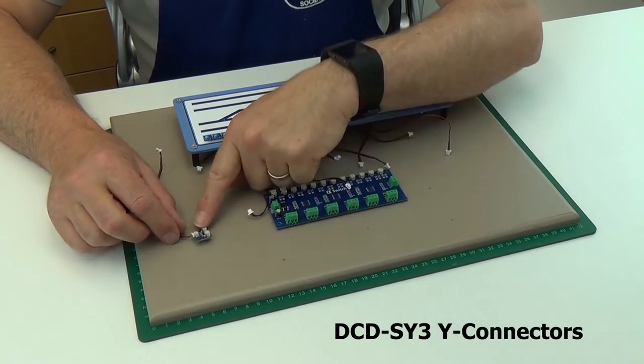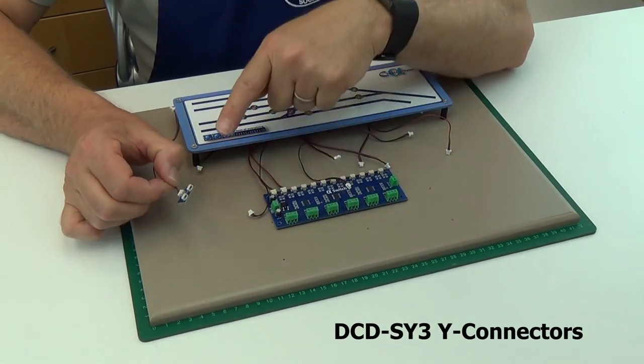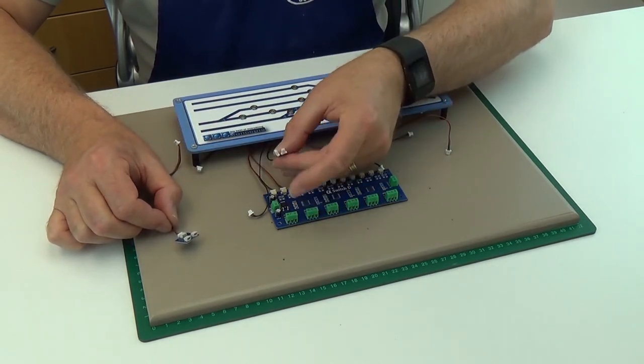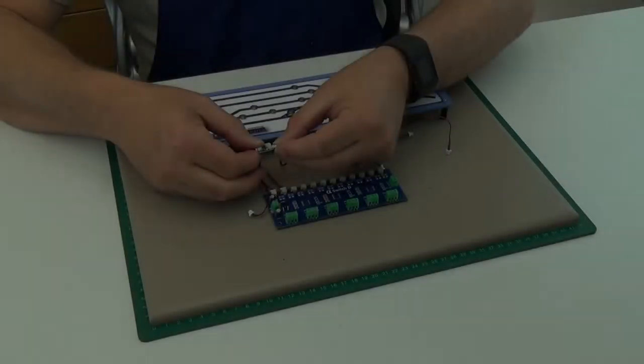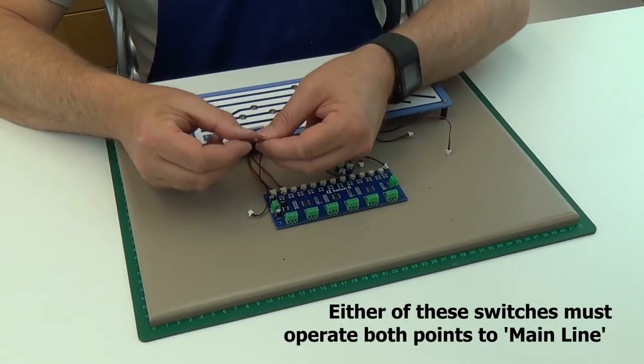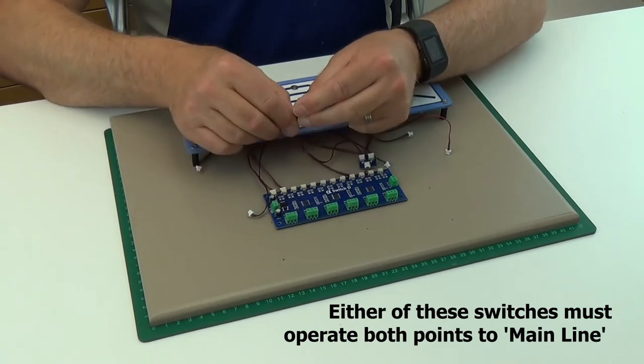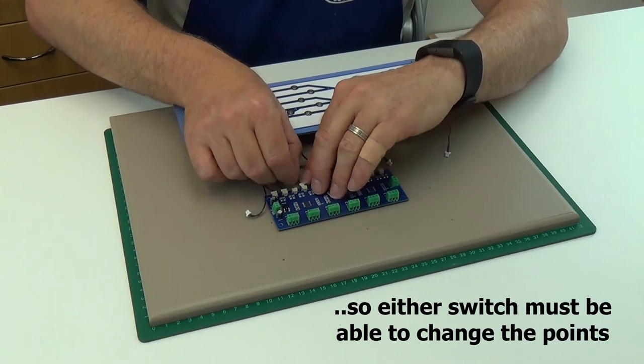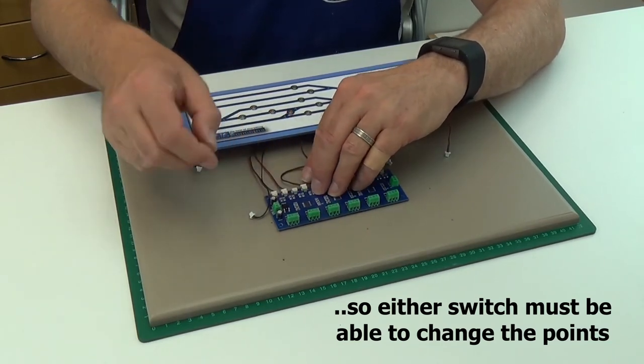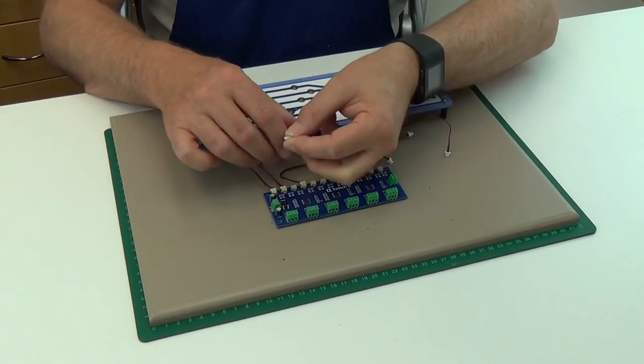To do this we join the two main line switches wires together using our DCC Concepts DCD SY3 Y connector, and the wire from this goes into one of the sockets. The switch wire from the middle of the crossover goes to the second socket.